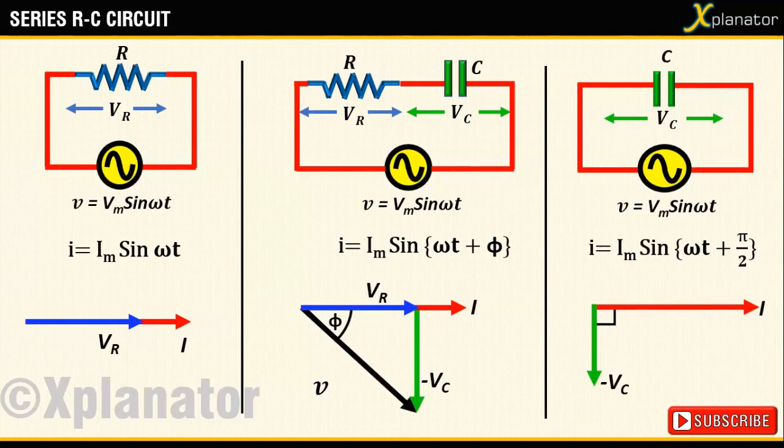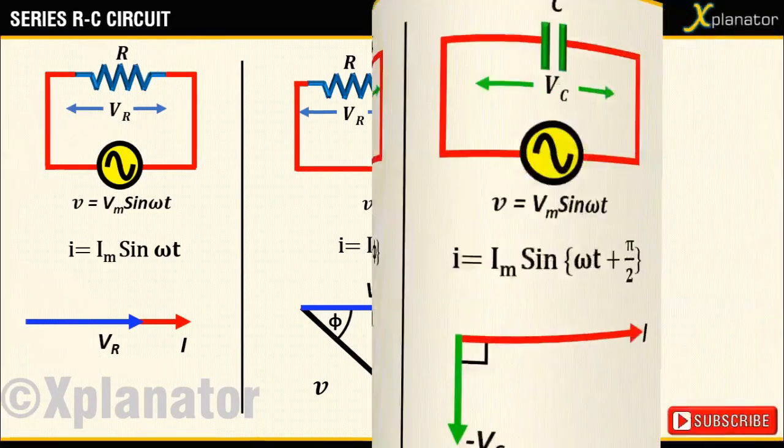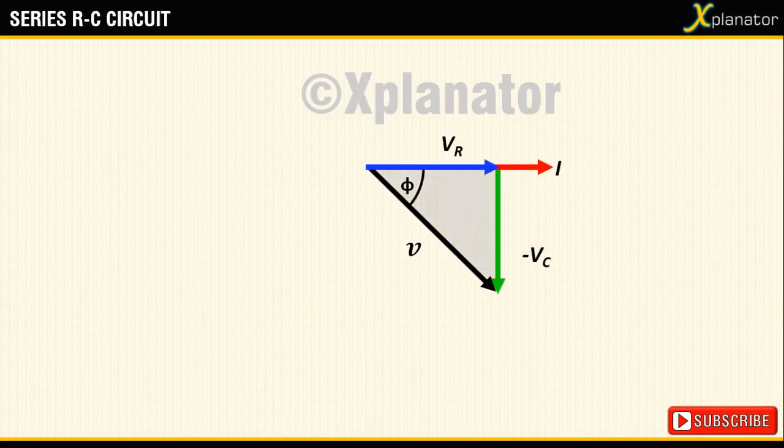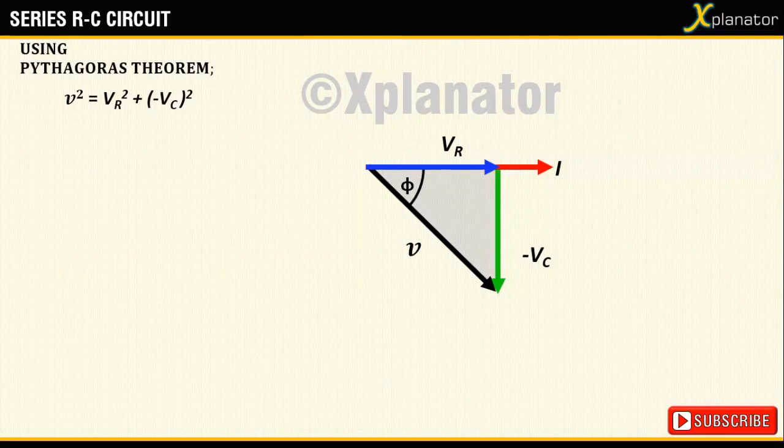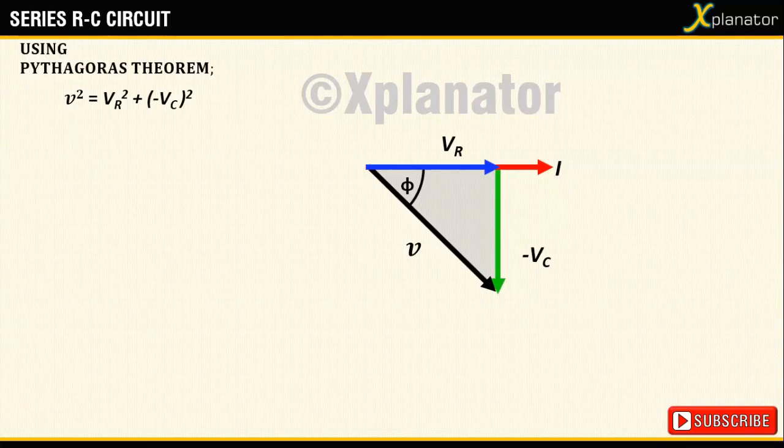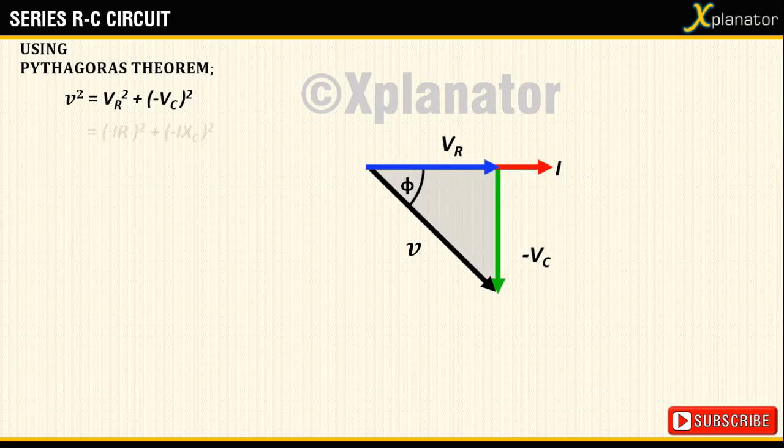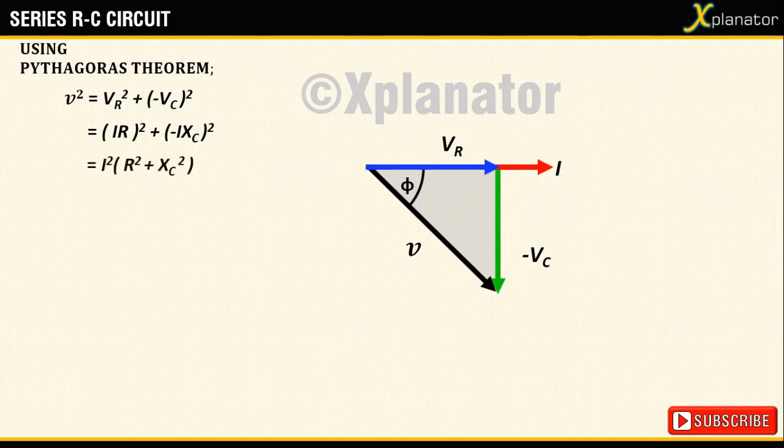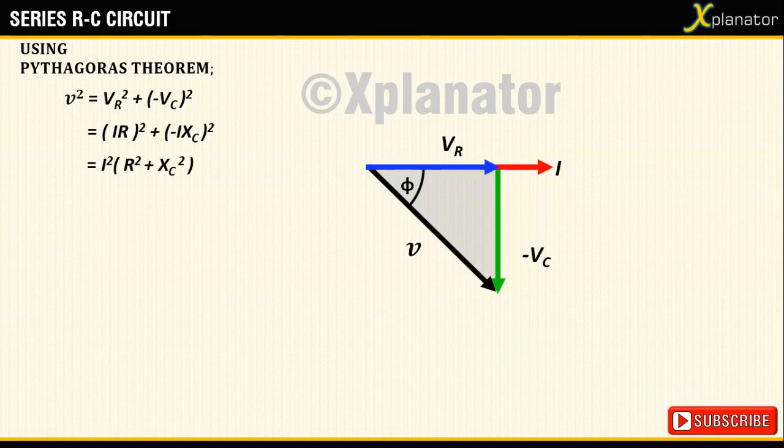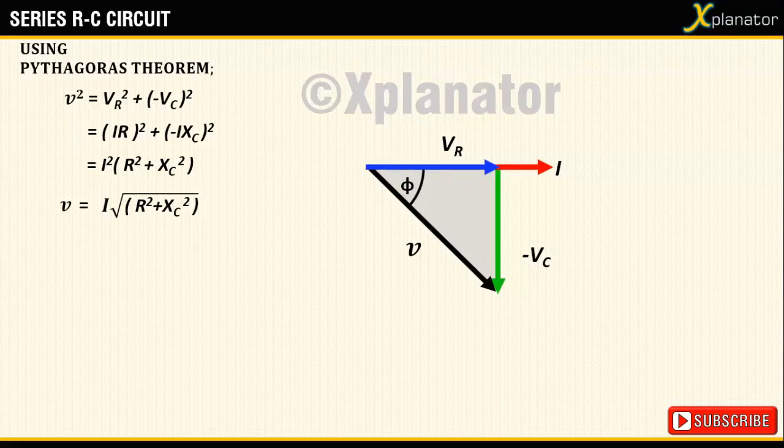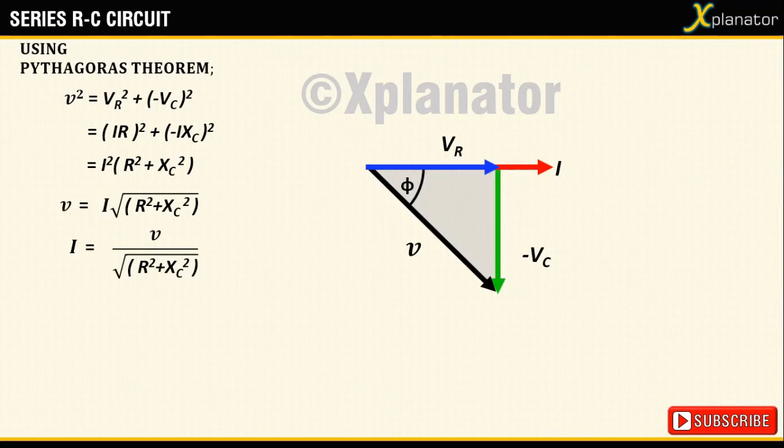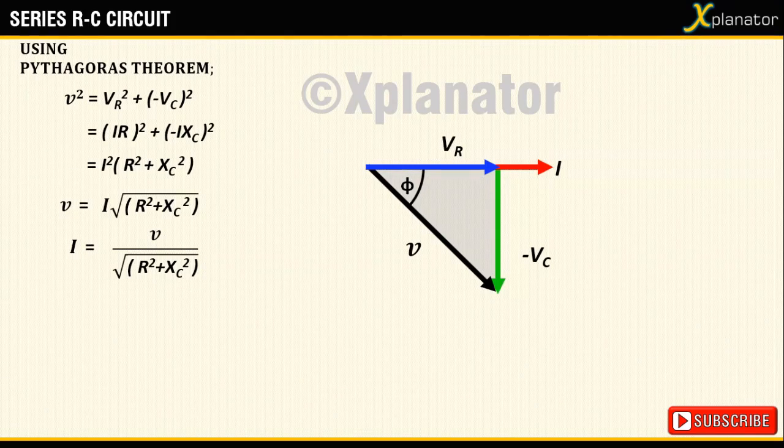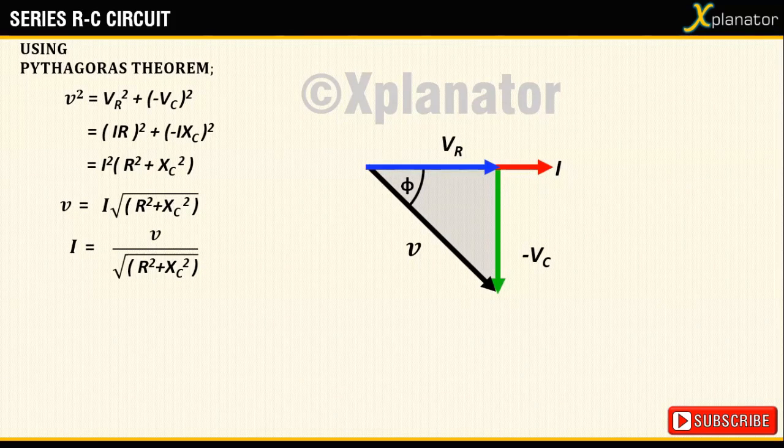To find the magnitude of the current Im, consider the right-handed triangle and with the Pythagoras theorem you get the relation V² = Vr² + (-Vc)². Substitute Vr as IR and Vc as IXc. Simplify to get an equation for current I. I can be written as V divided by square root of R² plus Xc².